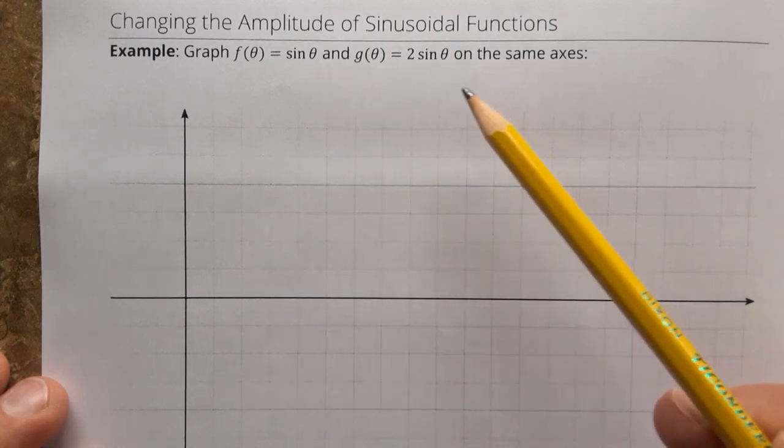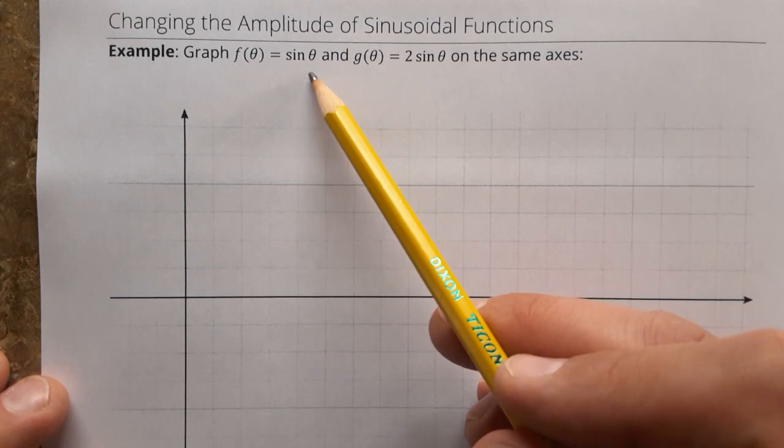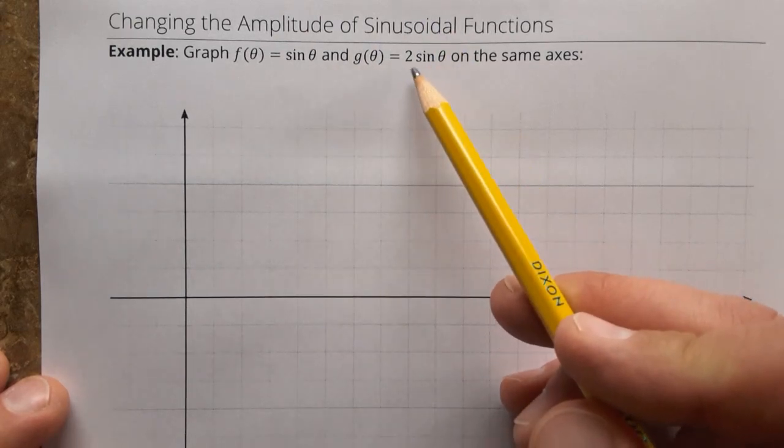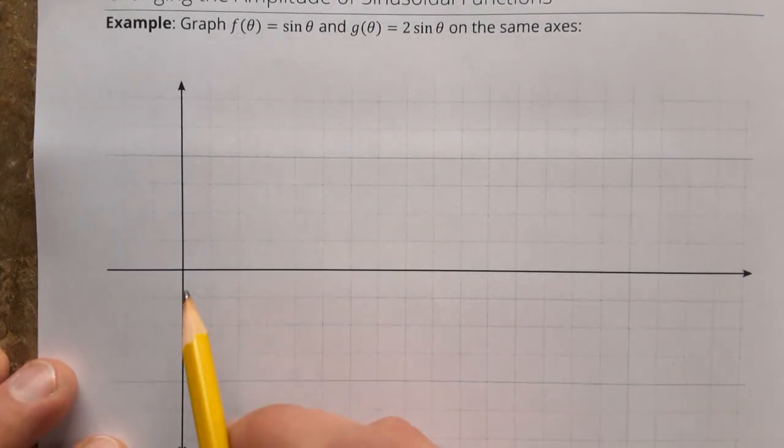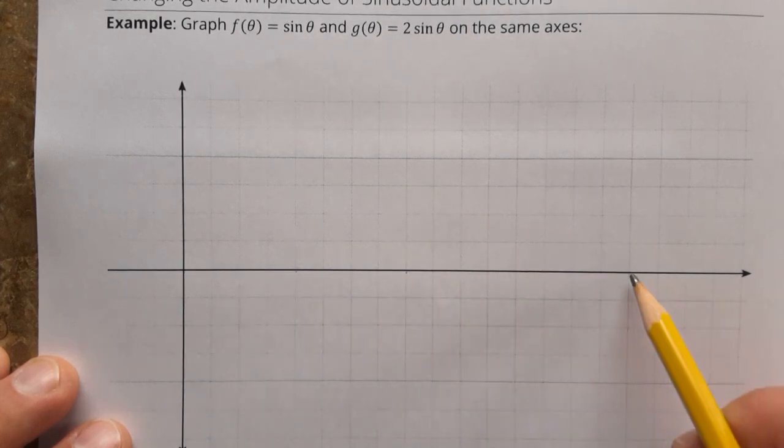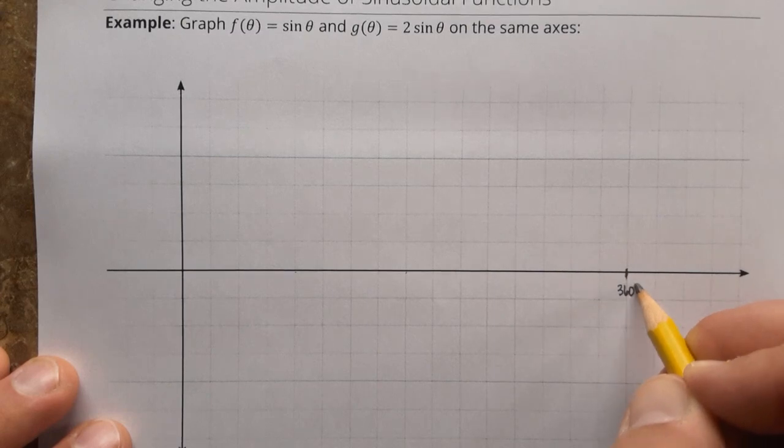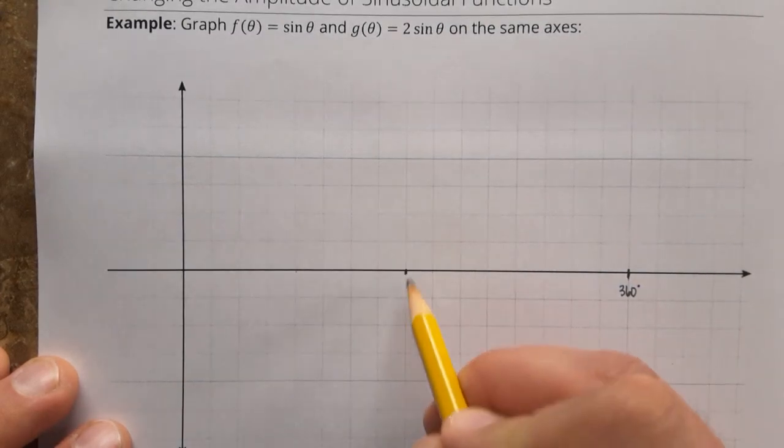So now let's relate those kinds of transformations to the same ones for sinusoidal functions. So I have here f of theta, theta is an angle, equals sine of theta. And g of theta is two times f or two times sine of theta. We're going to graph these on the same axes. So I've got an axis here, let's see, two. I'm going to make that my 360 degrees right here. And that makes halfway between there's 180.